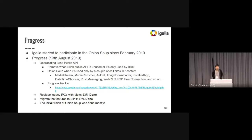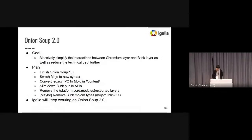So I think the initial vision of Onion Soup is mostly done — that's really good progress. Onion Soup 2.0 aims to massively simplify the interactions between the Chromium layer and Blink layer, as that leads to further technical debt reduction. 2.0 has planned to finish Onion Soup 1.0, switch Mojo to new syntax, convert more types to Mojo in content, slim down the Blink API, and remove the export layer in Blink. Igalia will keep working on Onion Soup 2.0.